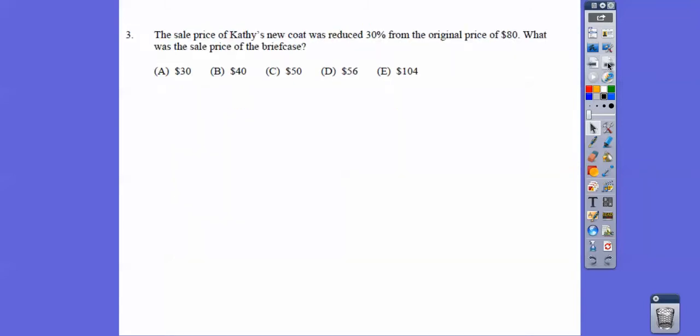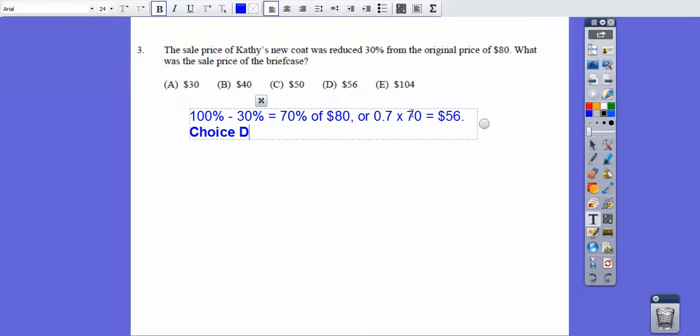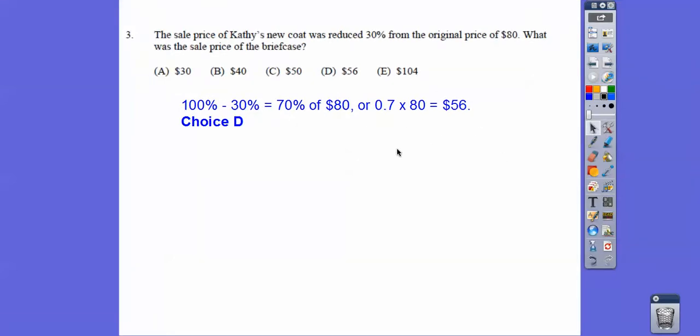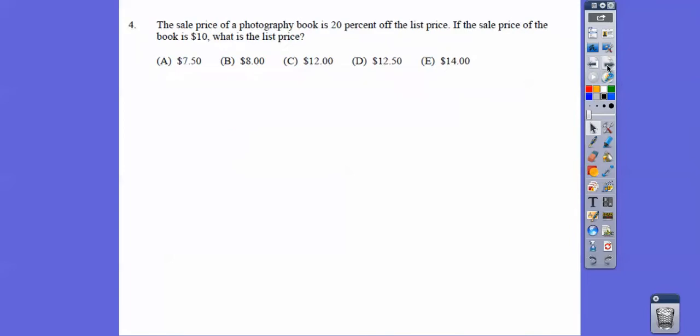The sale price of Kathy's new coat was reduced 30% from the original price of $100. So what was the sale price? If it's reduced 30%, then it's going to be 70%. So 70% of $80 is 0.7 times 80, and then we get 56 bucks right there. If you're doing it other ways, that's terrific. I'm just showing you one way. There's always several ways.